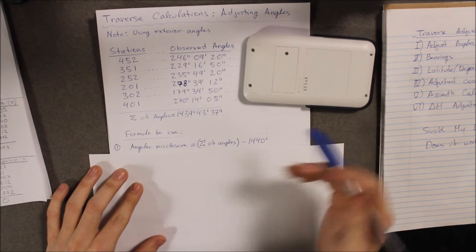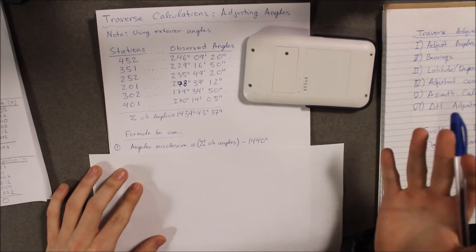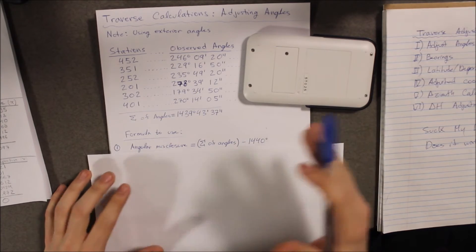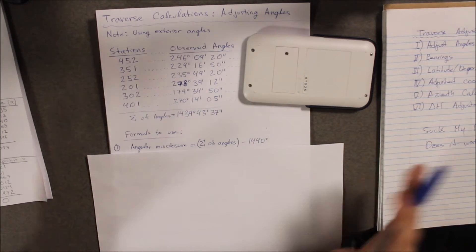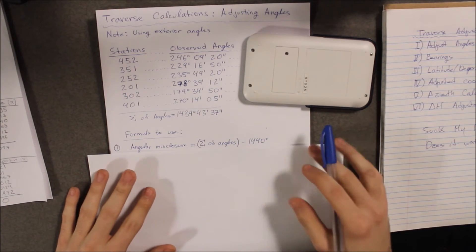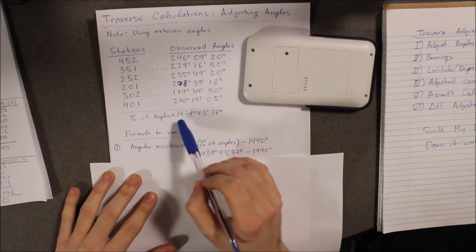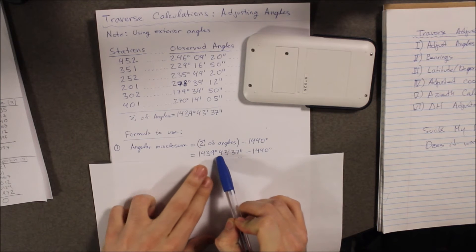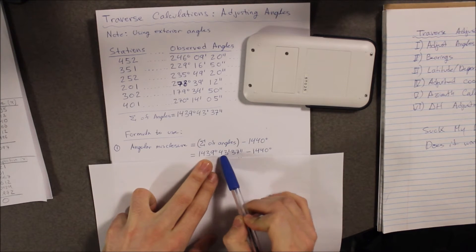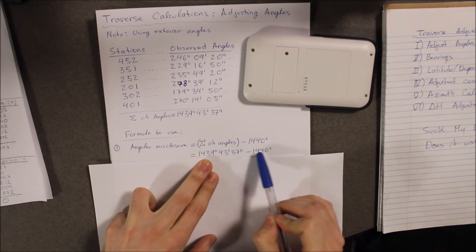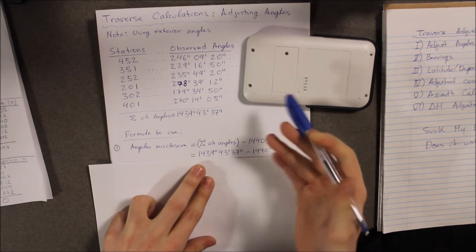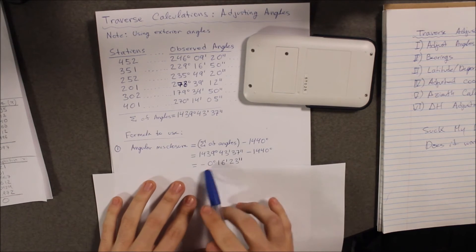However, yours might be different depending on how many sides or stations you have. In our program, most people have six, so we'll keep it at that. Next, I introduced the result here, as you can see. So I substituted it in and then I subtracted 1,440. This is the result that I got after.